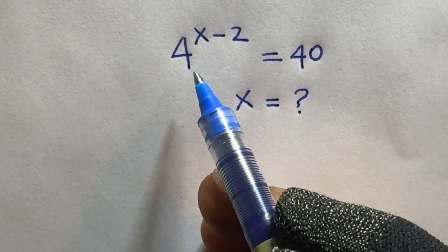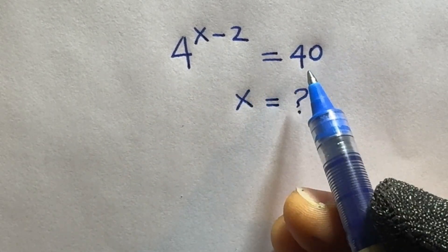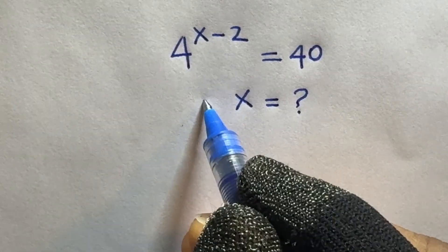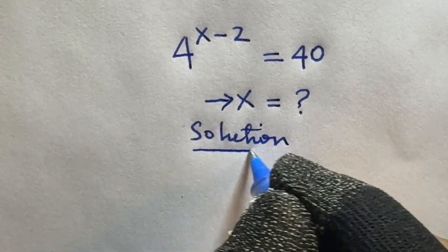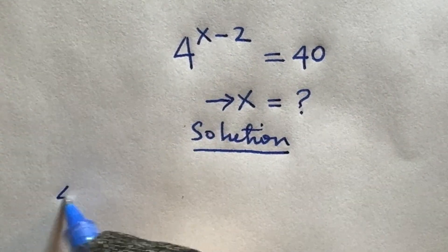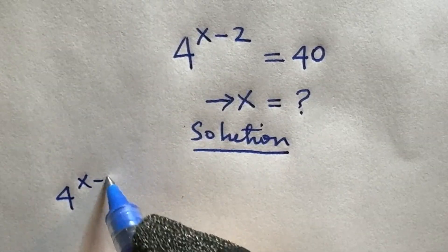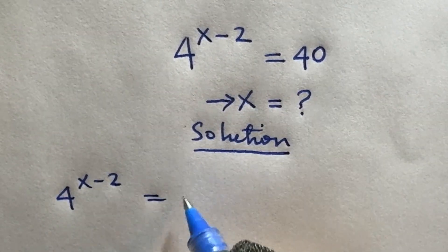4 raised to power x minus 2 is equal to 40. Find x.